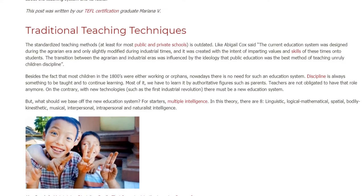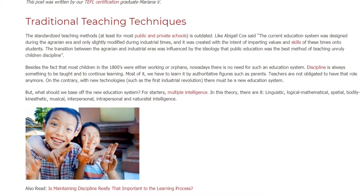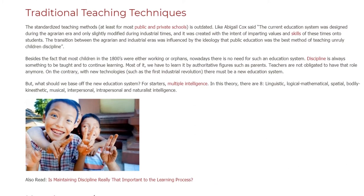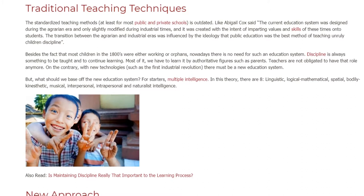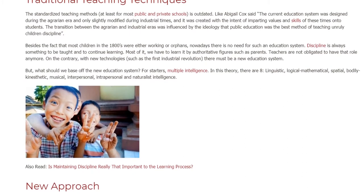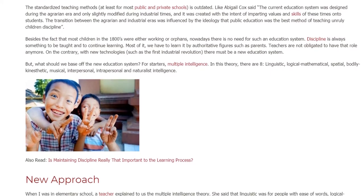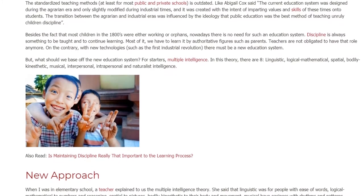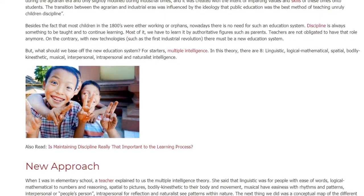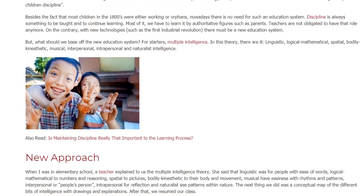Discipline is always something to be taught and to continue learning. Most of it we have to learn from authoritative figures such as parents. Teachers are not obligated to have that role anymore. On the contrary, with new technologies such as the fourth industrial revolution, there must be a new education system. But what should we base the new education system on? For starters: Multiple Intelligence.